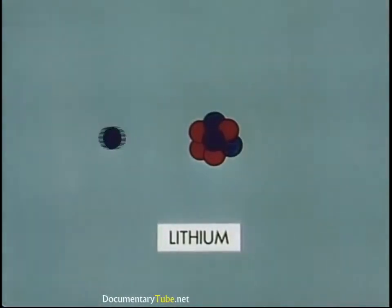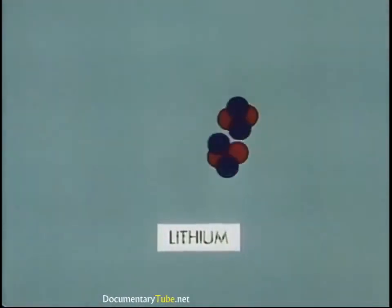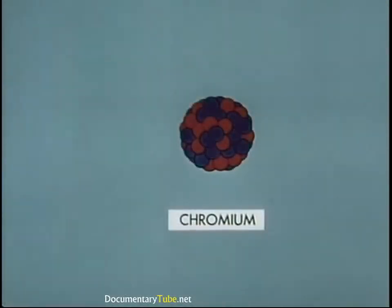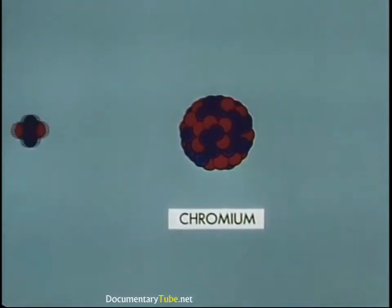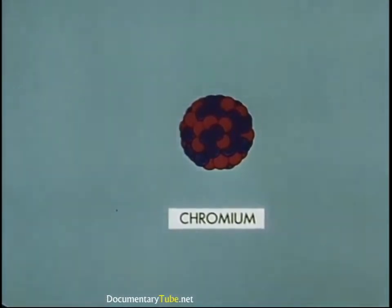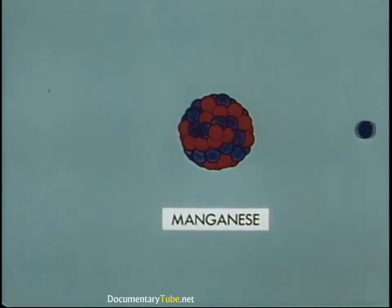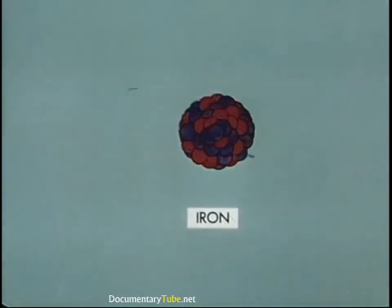He transmutes lithium into helium with a hydrogen nucleus as the projectile. By striking the nucleus of a chromium atom with a helium nucleus, he changes it into radioactive manganese with the emission of a proton. Manganese, in turn, decays to iron with the emission of a beta particle and gamma ray.